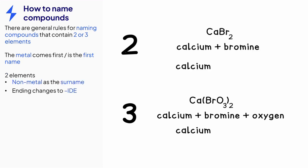CaBr2 contains two elements, which means that the non-metal bromine is the second name or surname. The element bromine changes to bromide to show that it is chemically bonded in a compound. This means that CaBr2 is calcium bromide.